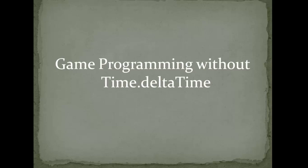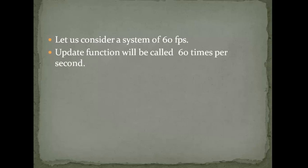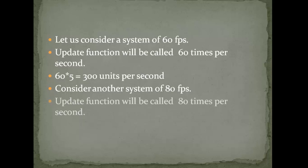First of all, in order to understand this scenario, we will discuss game programming without Time.deltaTime. If we have a system of 60 fps, it means 60 frames will be called in one second. Since we are writing our expression in the update function and in every update our player moves 5 units, it means in one second it will move 60 × 5 = 300 units per second. If the same program runs on an 80 fps system, the update function is called 80 times per second, meaning the player will move 400 units per second.